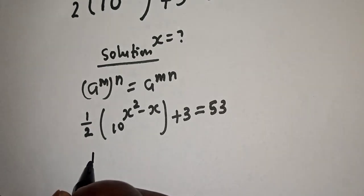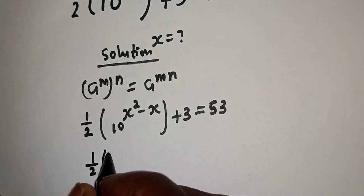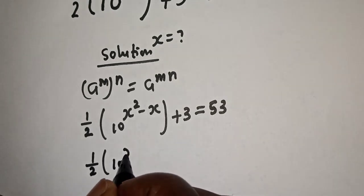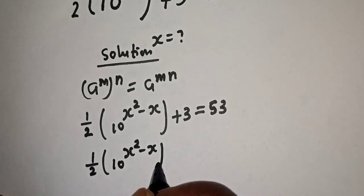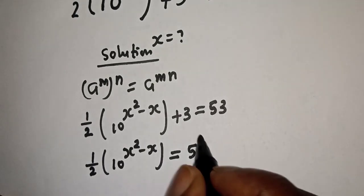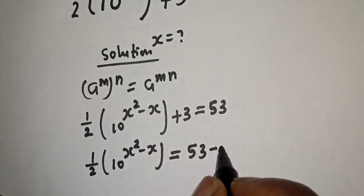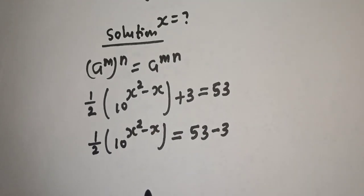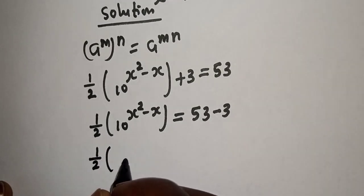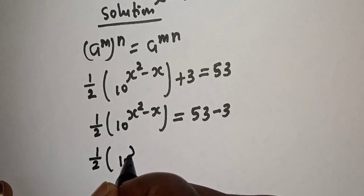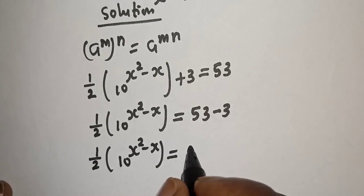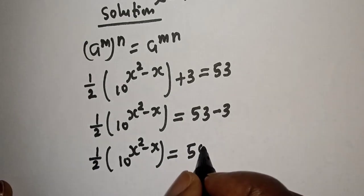Here, (1/2)(10^(s²−s)) = 53. If the +3 moves to the other side, it becomes minus 3: (1/2)(10^(s²−s)) = 53 − 3, which equals 50.